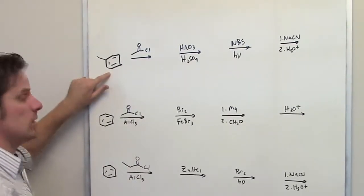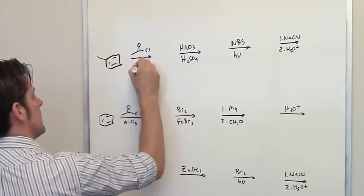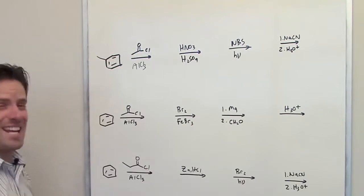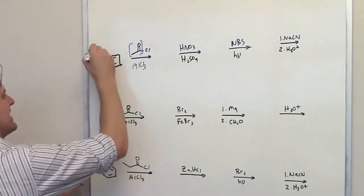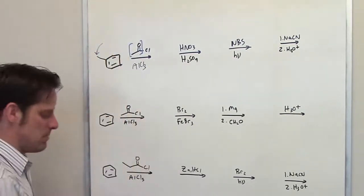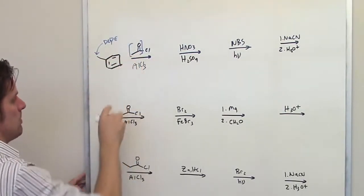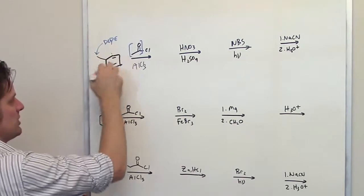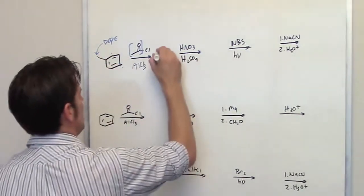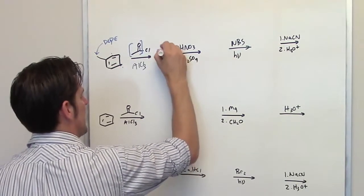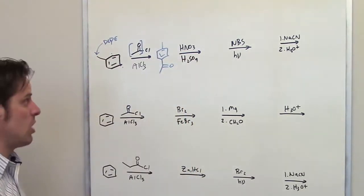Starting with toluene, I subject it to Friedel-Crafts acylation conditions — I forgot to write the aluminum chloride catalyst, but this places an acyl group onto the ring. Where does that group go? That depends on the pre-existing methyl substituent. That methyl is a donor. We have to remember DOPE: donors make things go ortho and para. So I get the acyl group placed at the ortho and para positions relative to the methyl — a mixture of both products. For simplicity, I'll draw only the para isomer, but the ortho isomer is also formed.